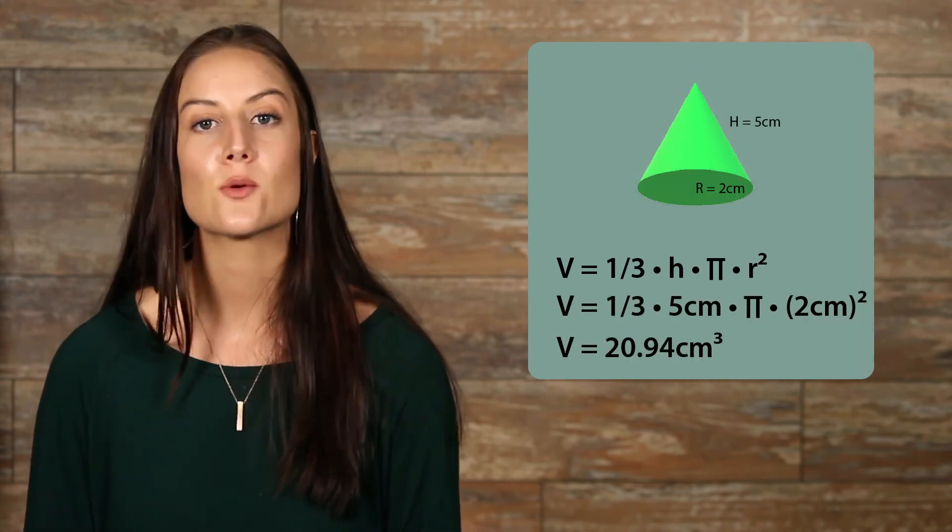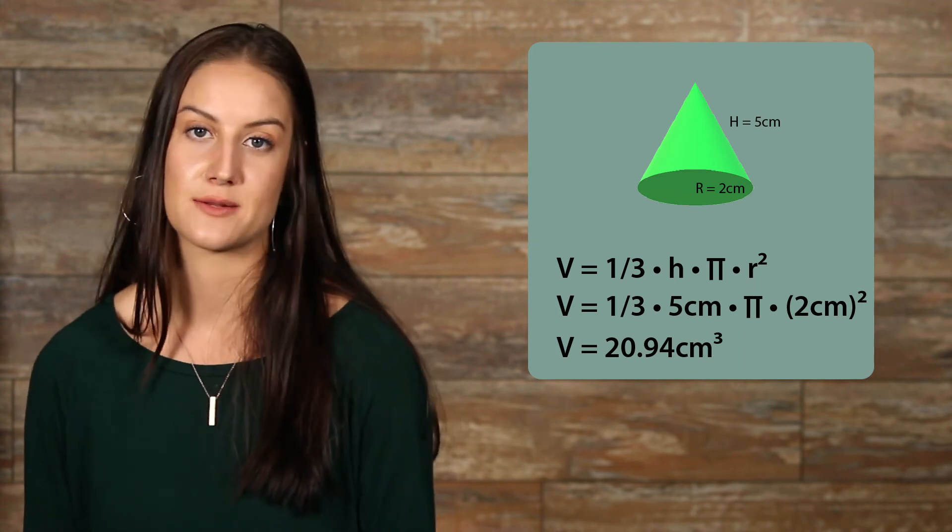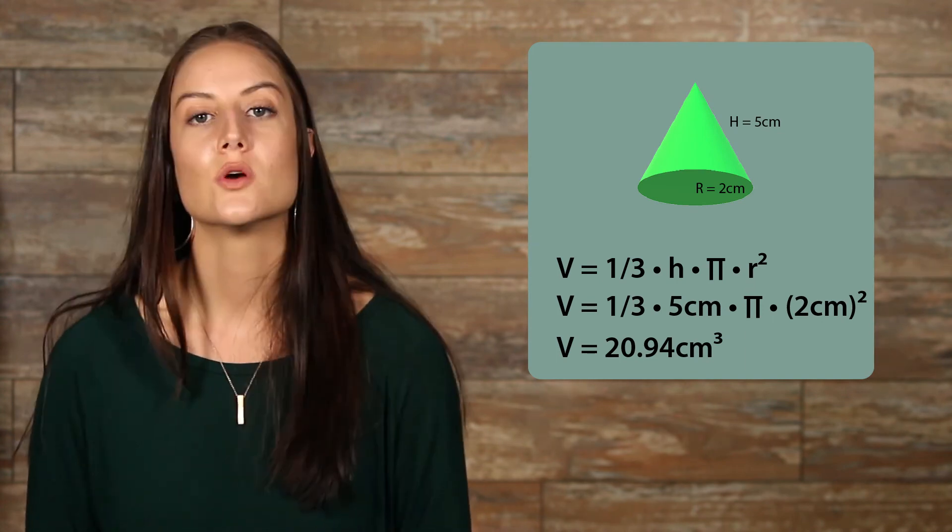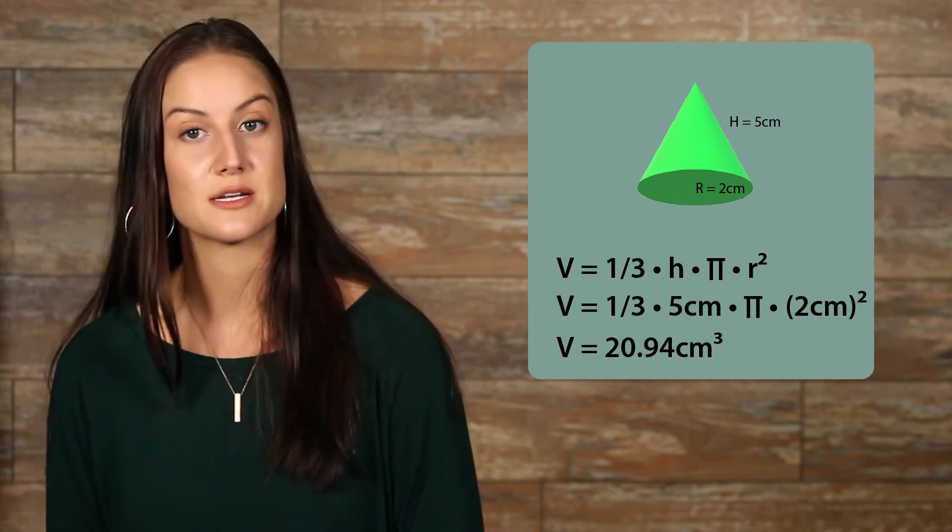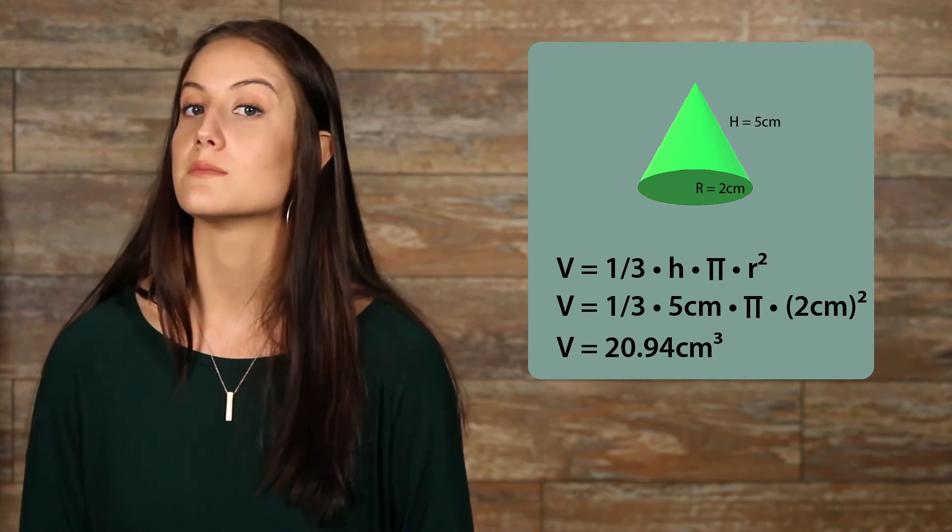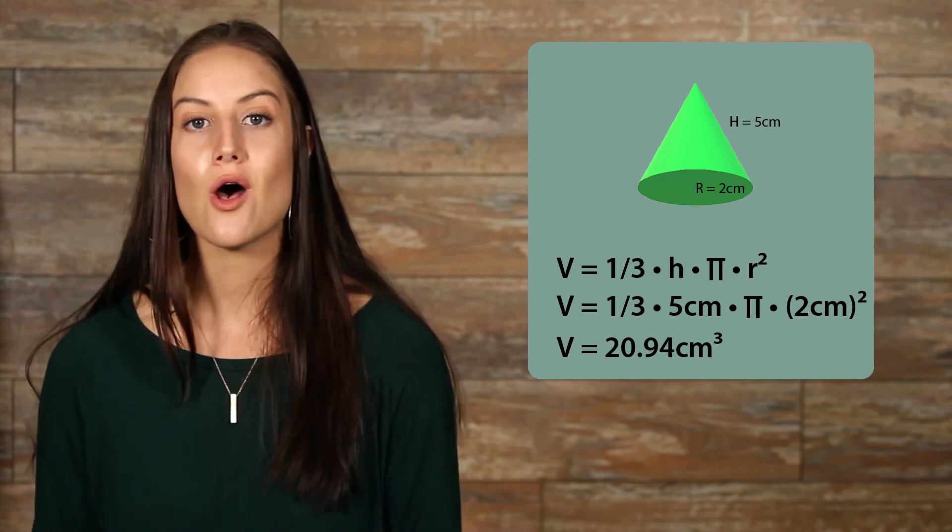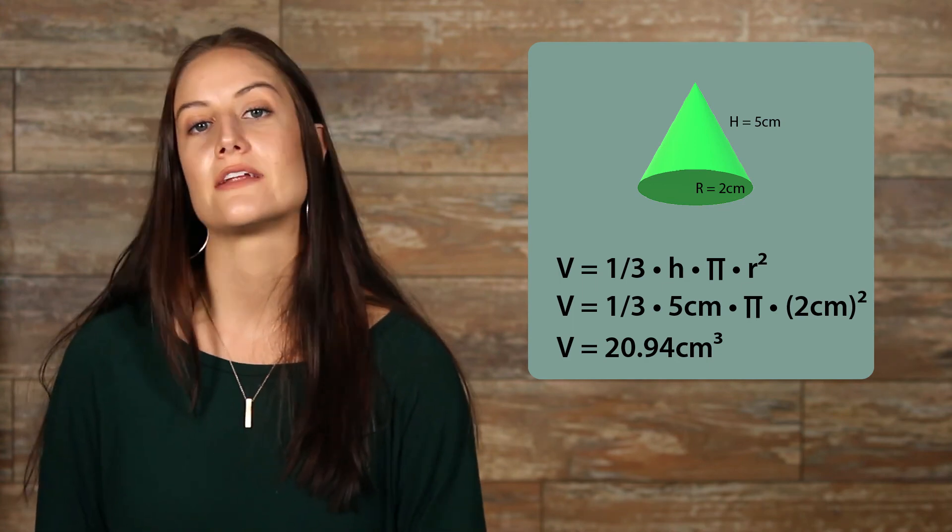Here's an example. Here we can see that we have a height of 5 centimeters and a radius of 2 centimeters. Once we plug in all of our numbers, we have volume equals 1 third times 5 centimeters times pi times 2 squared. When solved, we have volume equals 20.94 centimeters cubed.